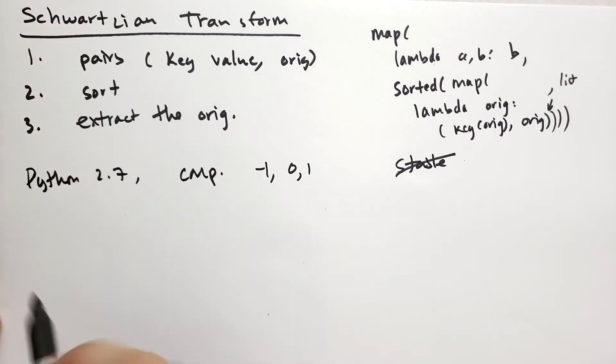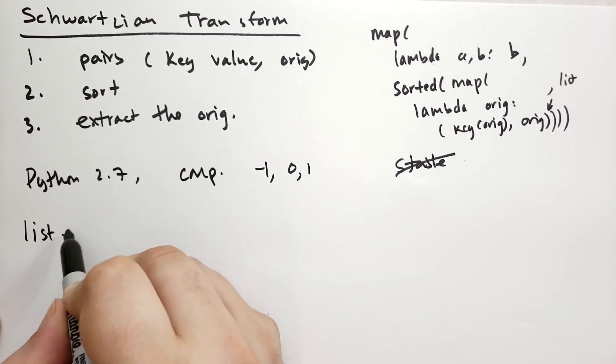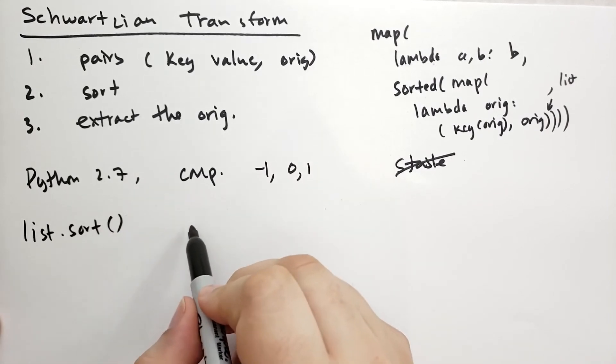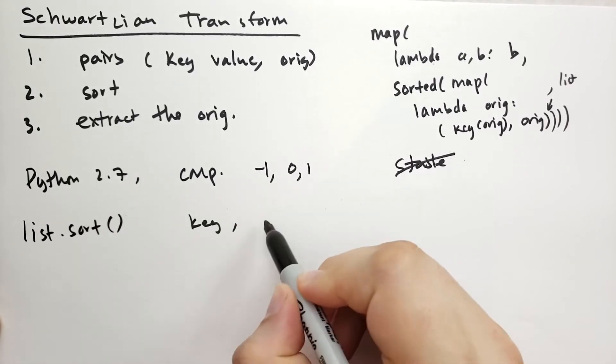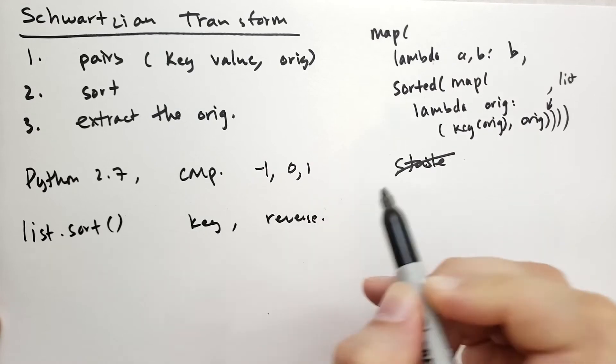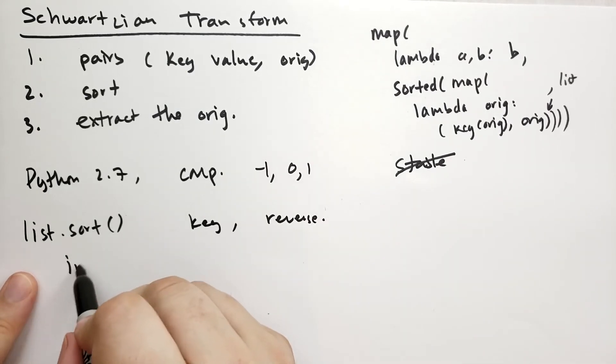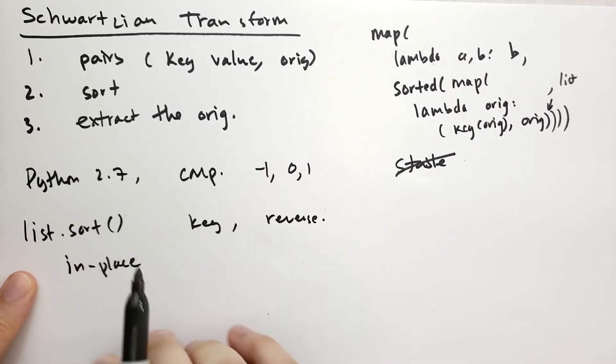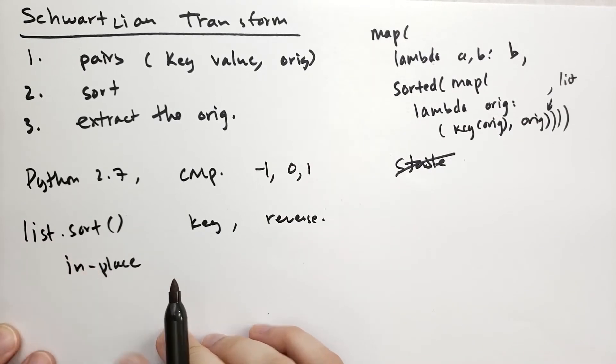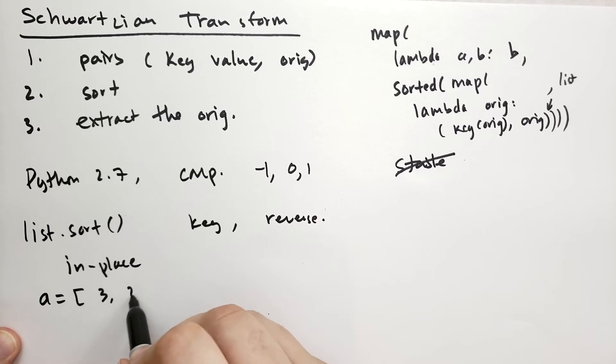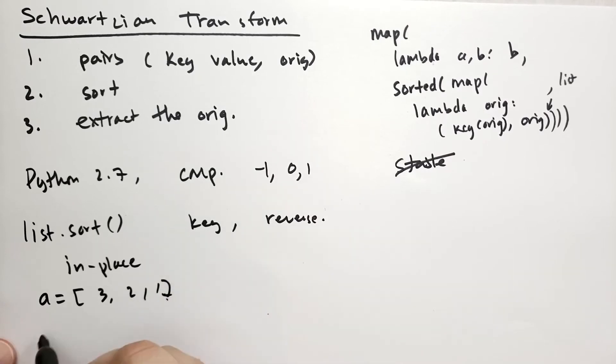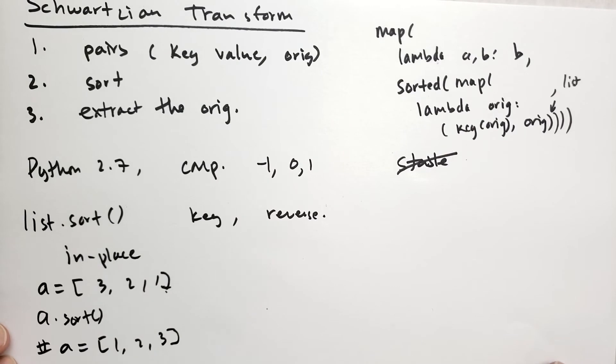We've covered sorted. There's also the list.sort method. It has the same parameters - we can specify the key and the reverse by name. This will do an in-place sort, and to remind yourself of that, it won't return anything. So if I said a is a list, let's say it's 3, 2, 1, and then I say a.sort, now a is going to be equal to 1, 2, 3. It does an in-place sort there.